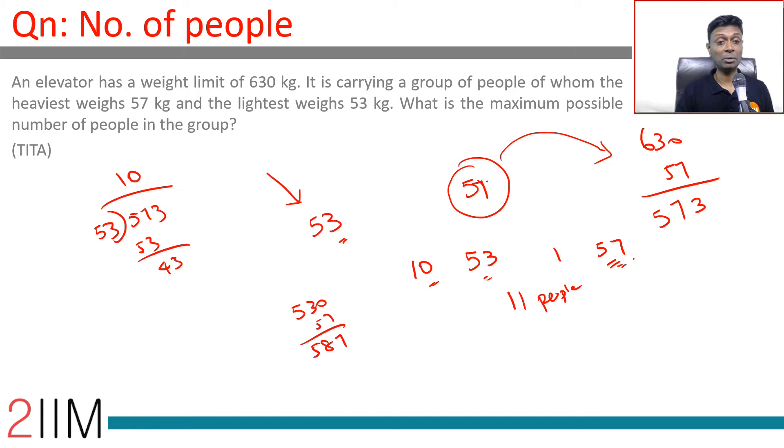But we cannot have 12 people in this group. 53 times 11 plus 57 is greater than 630, so that doesn't work. 11 people with one weighing 57 and the rest weighing something less than that but at least 53 will work.